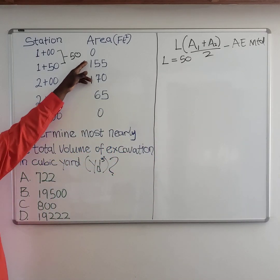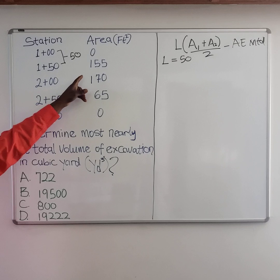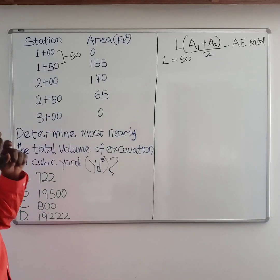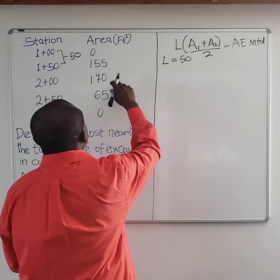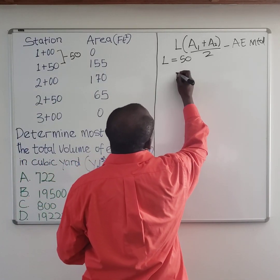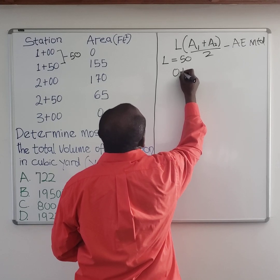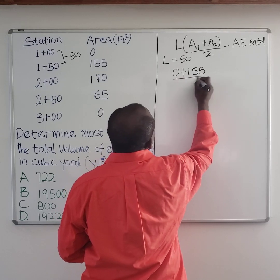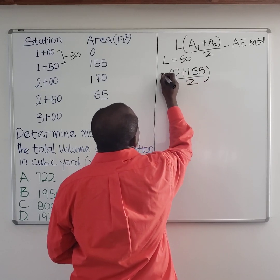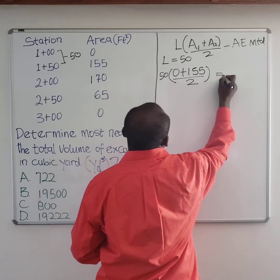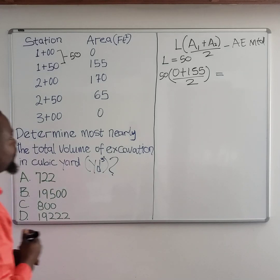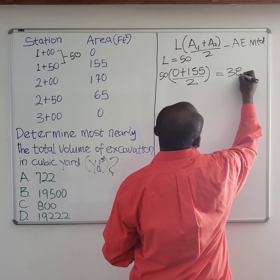Now we need to find the average area from station 1 to station 2, then multiply by the value of L. From station 1 to station 2, the average will be A₀ plus 155, divided by 2. Multiply by 50, and you are going to get a value of 3,875.